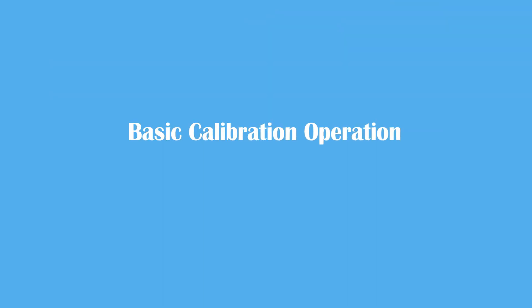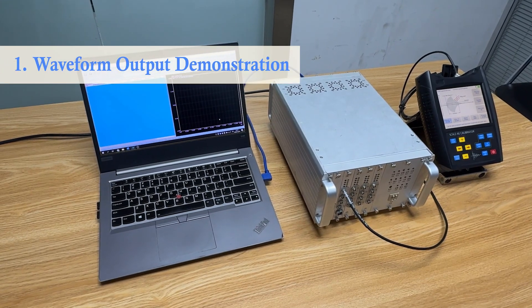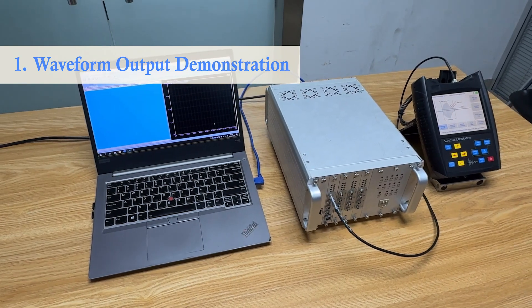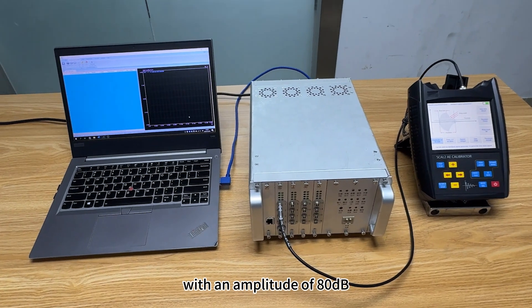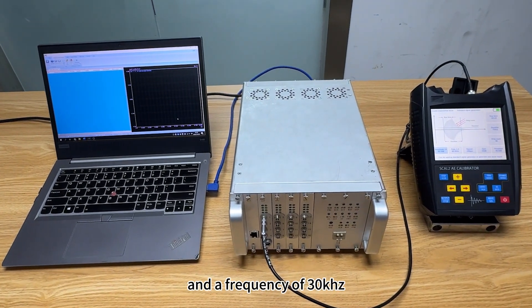Basic calibration operation. First, waveform output demonstration. This demonstration shows how to output a triangular wave with an amplitude of 80 dB and a frequency of 30 kHz.